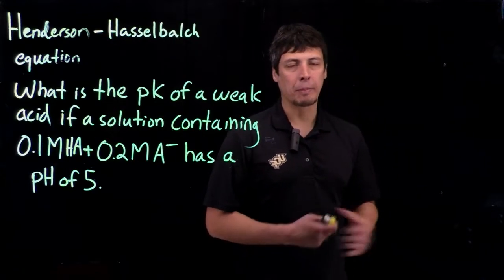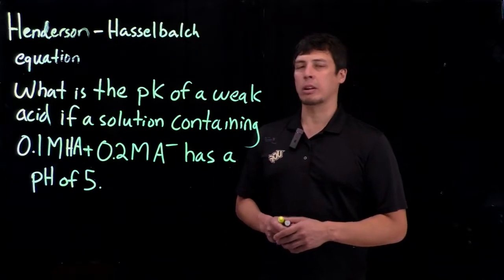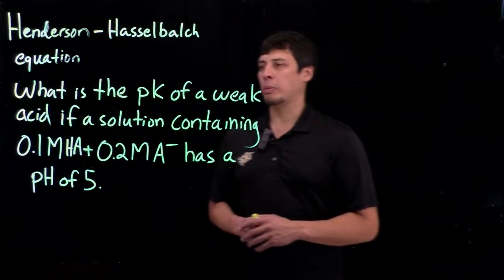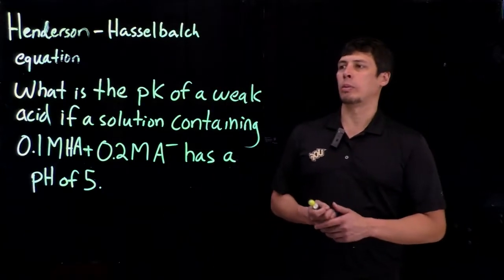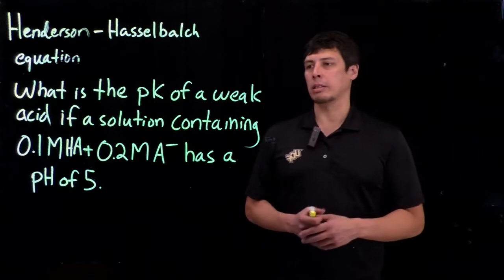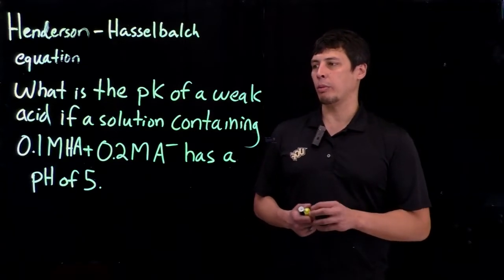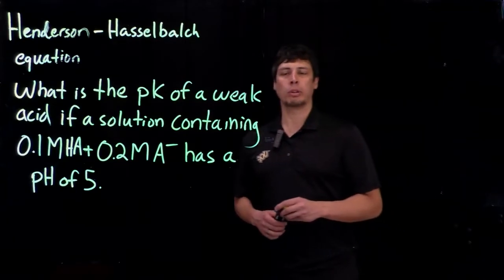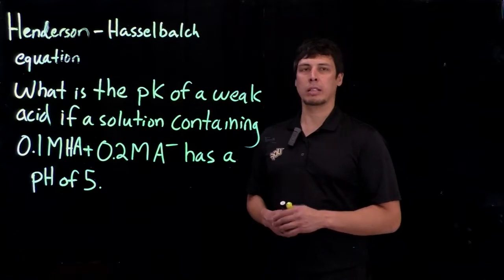Okay, so let's look at an example of what we might use the Henderson-Hasselbalch equation for. So look at the problem on the left. What is the pK of a weak acid if a solution containing 0.1 molar HA and 0.2 molar A- has a pH of 5?